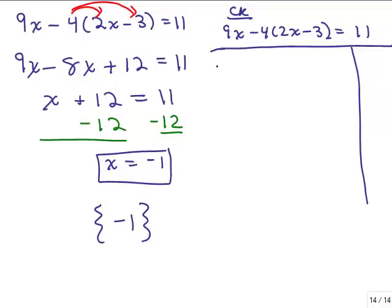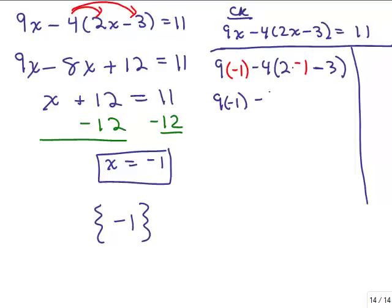Let's go ahead and check it — definitely check your work; that is what is so cool about algebra. We have 9 times negative 1 minus 4 times the quantity 2x minus 3. We're simply plugging negative 1 in for x and using the order of operations. Inside the parenthesis, I do multiplication first: 2 times negative 1 is negative 2, minus 3. We do not use the distributive property when we check. Negative 2 minus 3 is negative 5. So I have negative 9 minus 4 times negative 5, which is negative 9 plus 20.